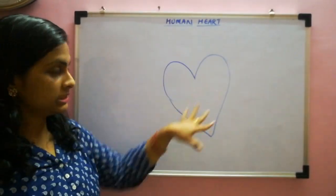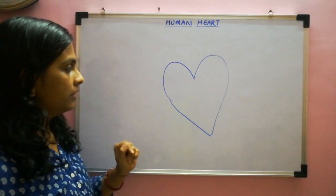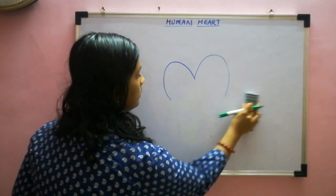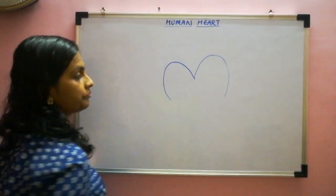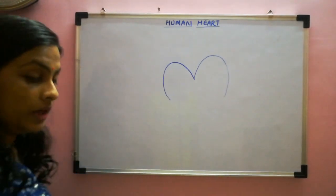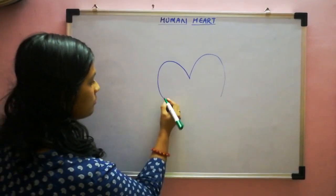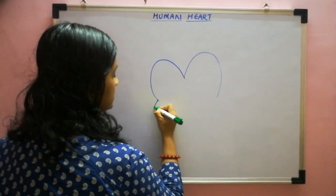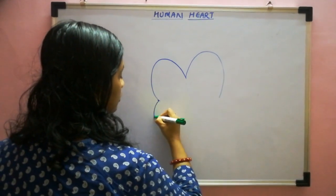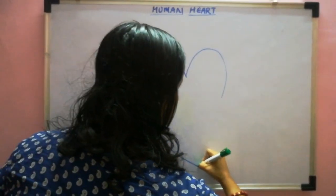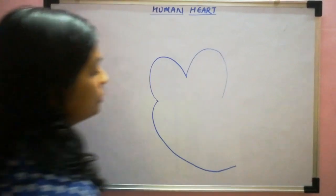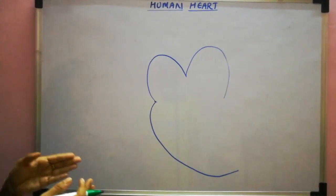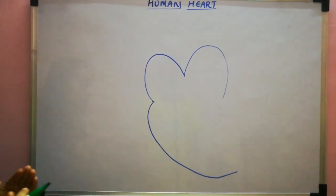First draw this shape and then rub the lower portion from here completely. Then from here you have to just make a curve and tilt it towards the left side. As you know, the heart is towards the left side.